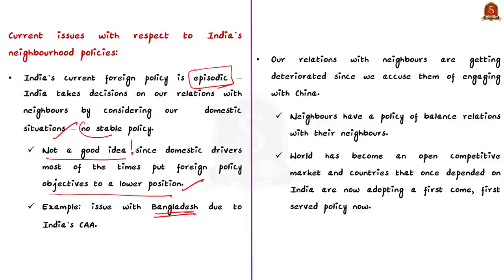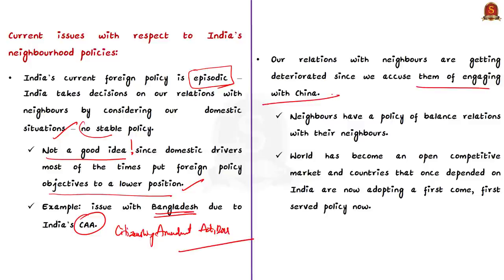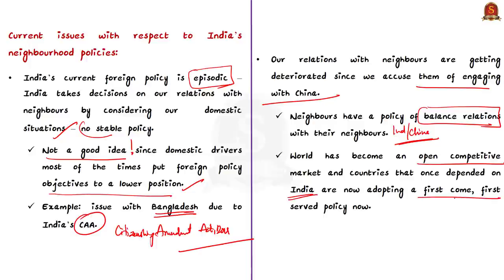Domestic drivers most often put foreign policy objectives in a lower position. For example, CAA is a domestic issue but it has affected relations with Bangladesh. Second, more often our relations with neighbors deteriorate since we accuse them of engaging with China. But naturally all these countries have a policy of balanced relations with their neighbors — be it India or China. Moreover, South Asia has become an open competitive market where countries once reliant on India now adopt a first-come-first-serve policy.